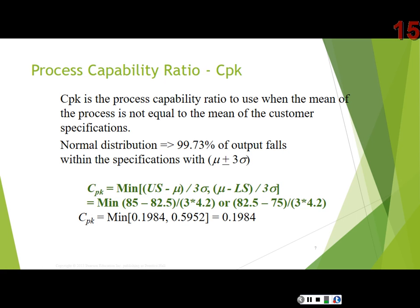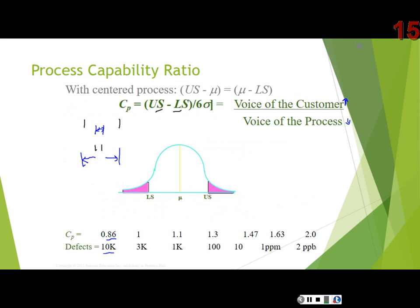Going back to our initial chart, that should make sense — because of where the mean is relative to the lower specification limit, we have much more opportunity to be successful there than on the upper side. So the CPK value of 0.1984 defines the process capability. Is the process capable? No — not capable, because it's less than one. With a centered process, we want the voice of the customer to be larger than the voice of the process, meaning our process range should fit inside those customer specification limits.